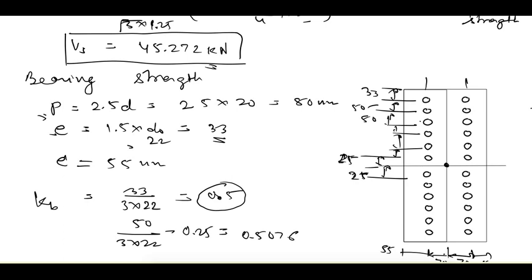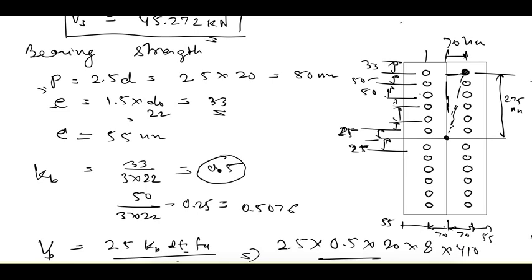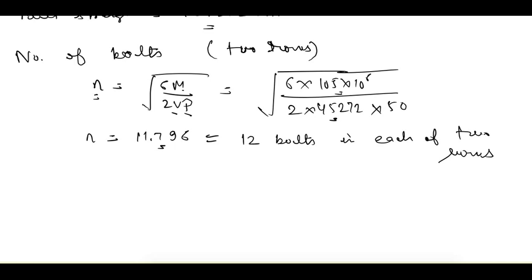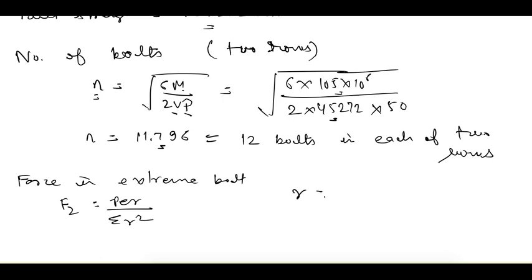Now we find the force in the extreme bolt. For that we need r, which is the distance from the CG to the extreme bolt. The vertical distance is 275 mm and the horizontal distance is 70 mm. So r = √(275² + 70²) = 283.769 mm. We are now calculating the force in the extreme bolt due to moment.